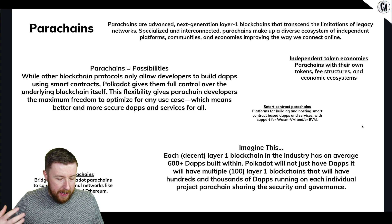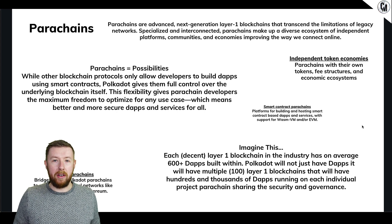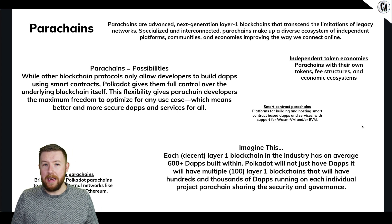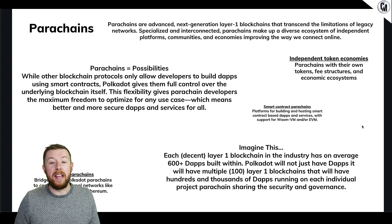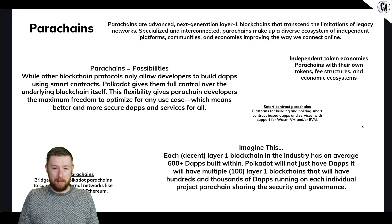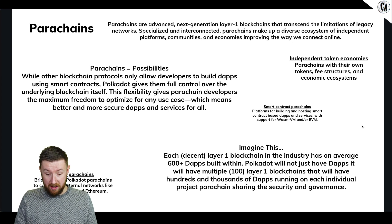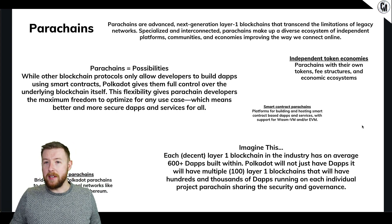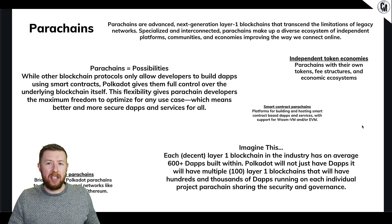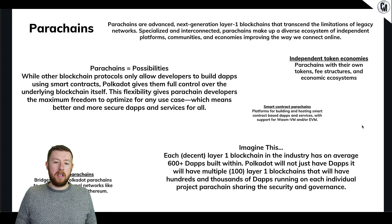Now we're going into deeper stuff in terms of parachains, because I think this is where the money will be coming in. These are not just crappy projects - they are layer one projects, huge blockchains, and there will probably be quite a few blue chips going forward. A parachain is an advanced next-generation layer one blockchain that transcends the limitations of legacy networks. Specializing and interconnected parachains will make up a diverse ecosystem of independent platforms, communities, and ecosystems.